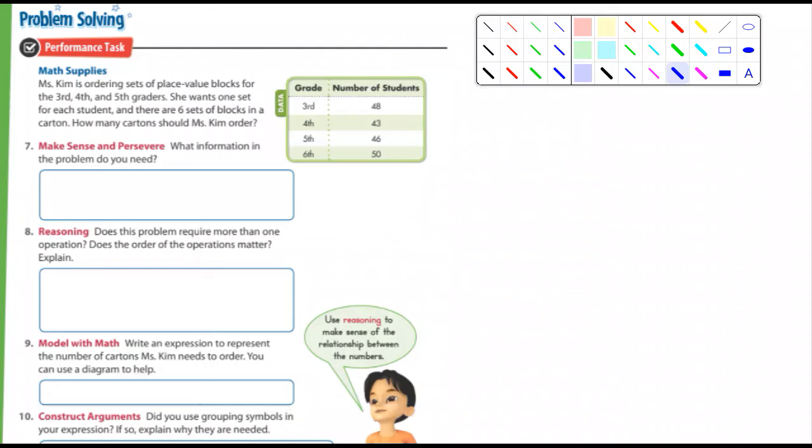So she's ordering place value blocks for all those grades. Well, here's third grade, here's fourth grade, here's fifth grade. Did they say anything about sixth grade? No, so I'm not even going to worry about that. And she wants to use one set for each student. Notice that right here is the number of students. So in third grade there's 48 students and she wants one for each student.